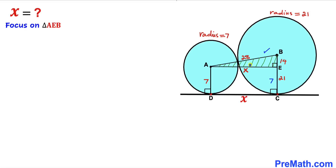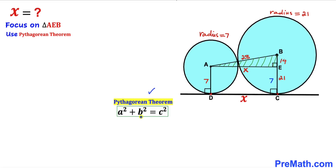Now let's focus on triangle AEB. We can see that this is a right triangle, so we are going to use the Pythagorean theorem: a² + b² = c², where AB is the hypotenuse c. Filling in the values, this gives us x² + 14² = 28².